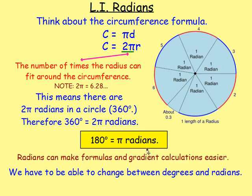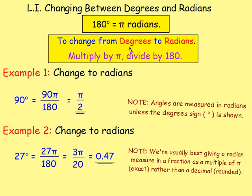The first thing we have to do is convert between degrees and radians. To go from degrees to radians, you multiply by π and divide by 180. For example, 90 degrees — you introduce π, divide by 180, and simplify. Notice that we don't use the degrees sign, because angles are measured in radians unless the degree sign is shown. Another example: multiply by π, divide by 180, and you get 3π over 20.